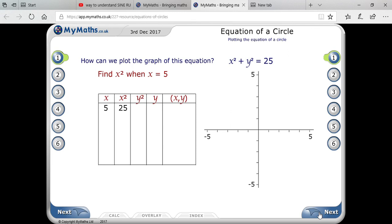Because 25 transfers to the other side: 25 - 25 = 0, so y² = 0, which means y = 0. So your point is (5, 0). Now you take another point like x = 4.